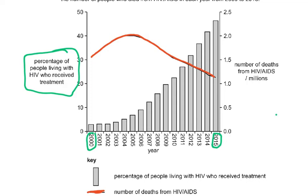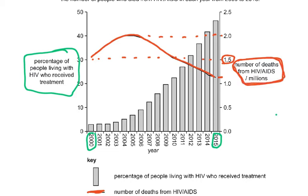The number of deaths is on the right y-axis in millions. It started at approximately 1.5 million, went up to about 2 million, then came down to around 1.25 million. The bars on the left y-axis show the percentage of people receiving treatment. Please spend time reading the graph carefully and understanding both axes.